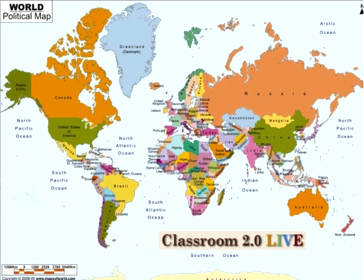Here's where we're going to ask you to get working. On the left-hand side of your whiteboard are the tools — the second one down is a little starburst. Click on that and plant yourself in the middle of the world so we get a good sense of where our audience is.